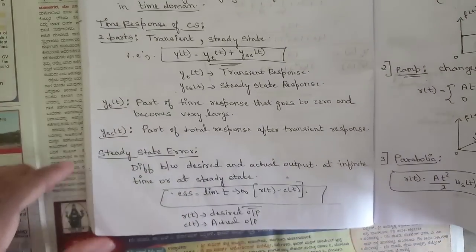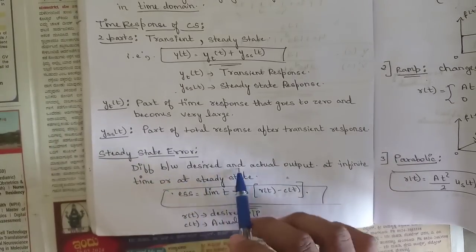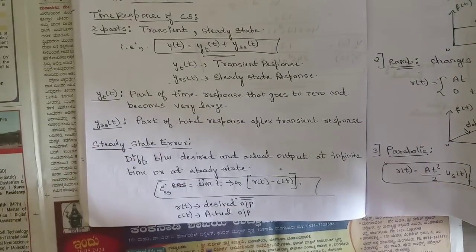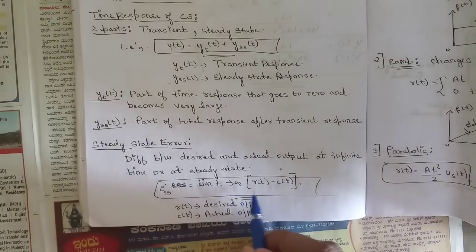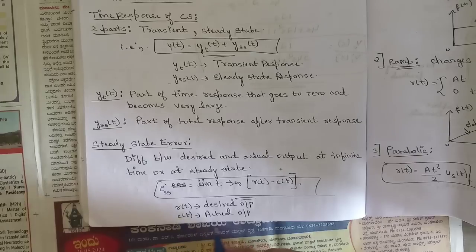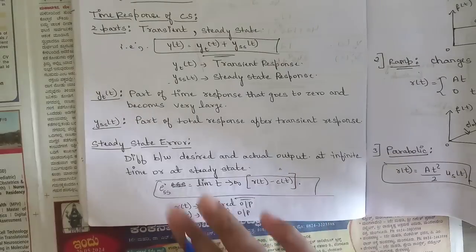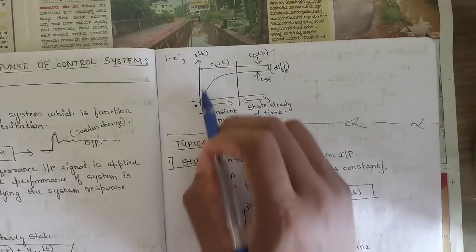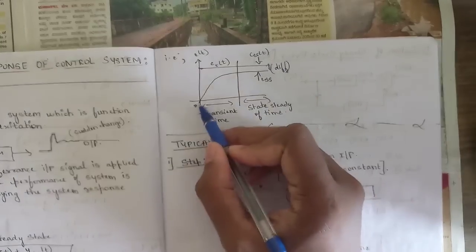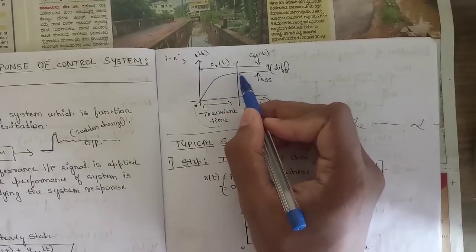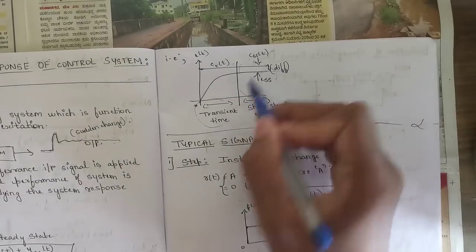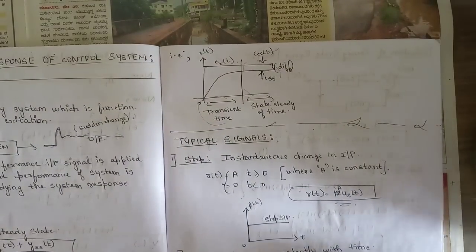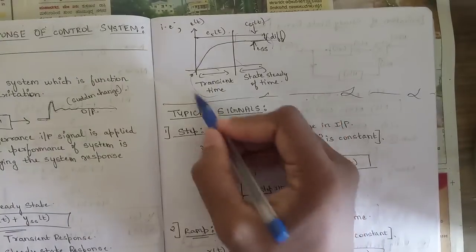The steady-state error ess is the difference between the desired and actual output at steady state (as t→∞). It is expressed as ess = lim(t→∞) [r(t) − c(t)], where r(t) is the desired output and c(t) is the actual output. In a typical response plot, the transient state shows rapid change, and the steady-state region shows where the error remains.